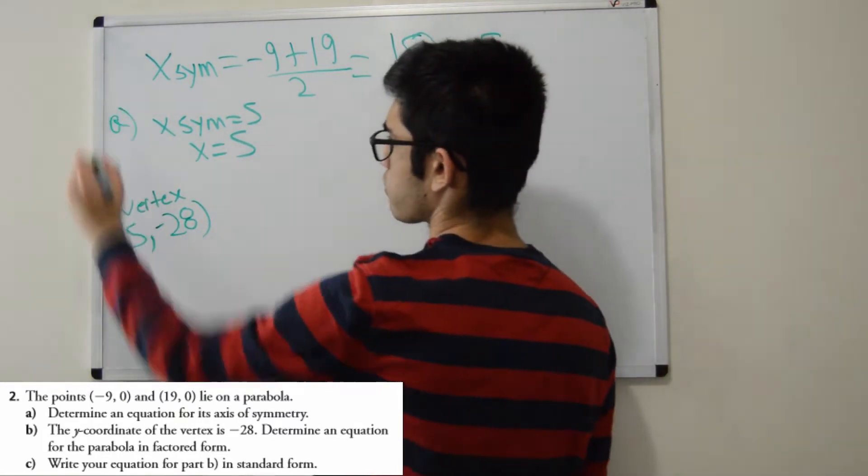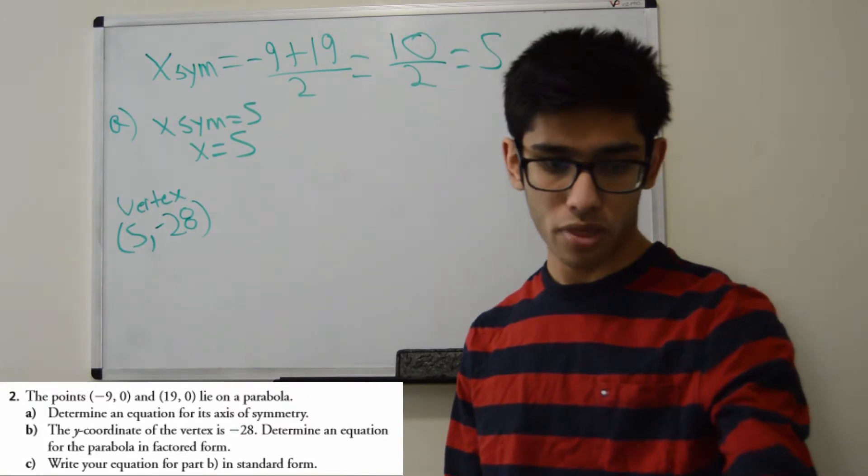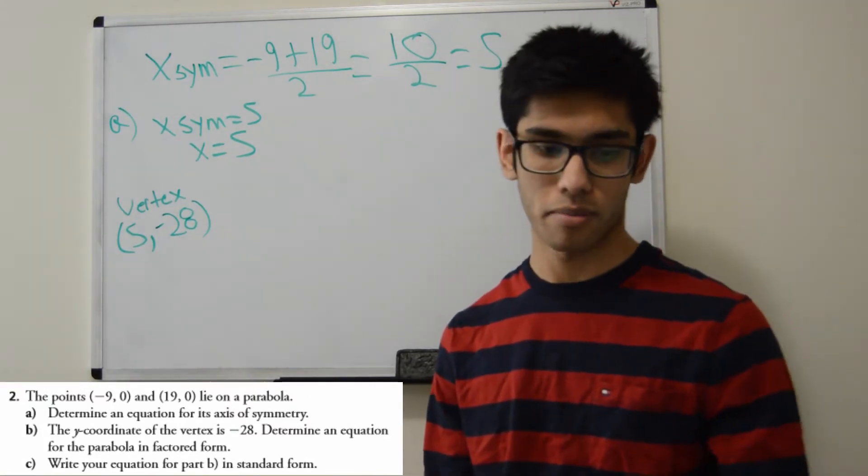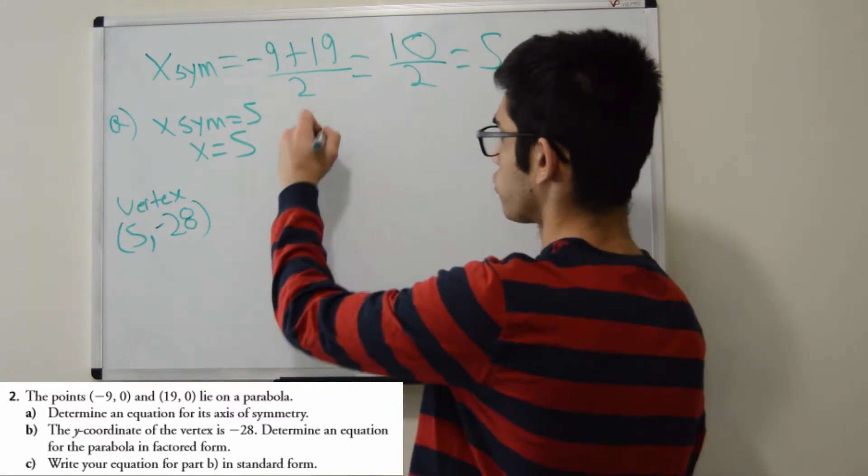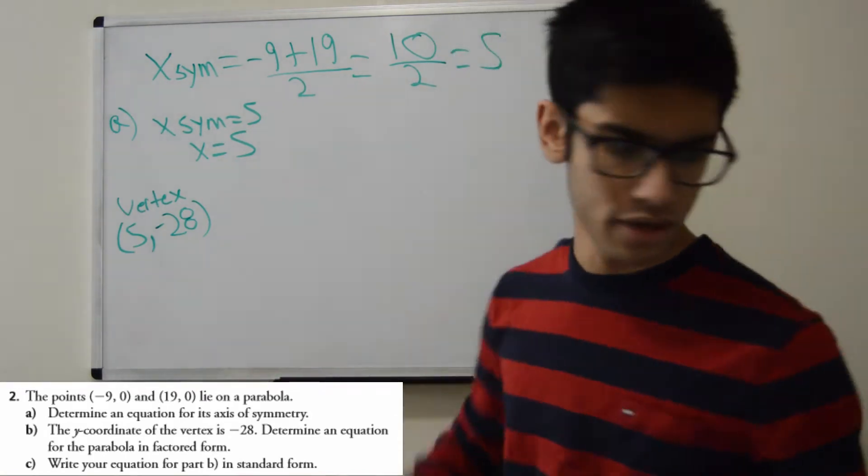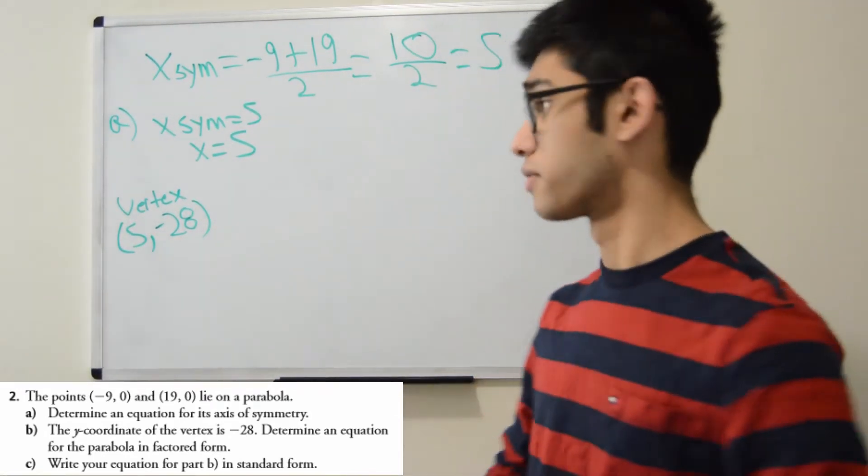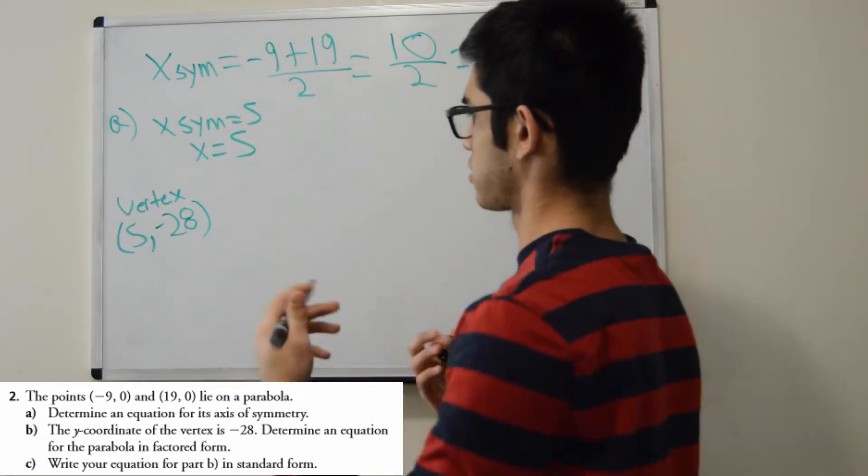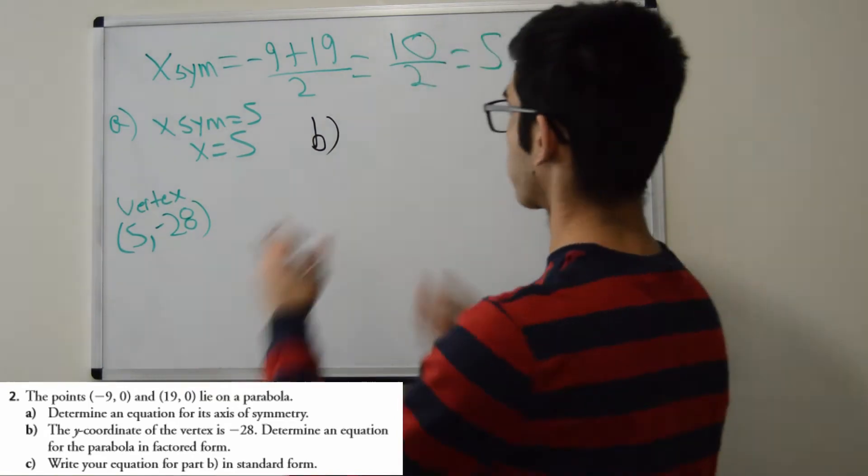So this is question A. And the question B is, determine an equation for the parabola in a factored form. So since it's a factored form, let's write down what we know so far about factored form. Maybe I should switch colors for B. Let me know in the comments if switching colors helps you guys.